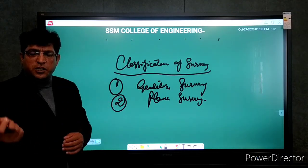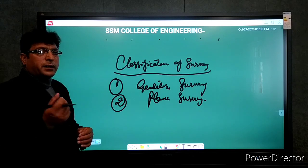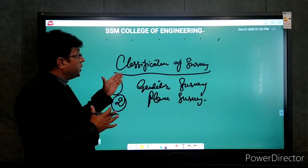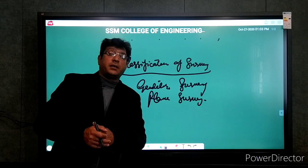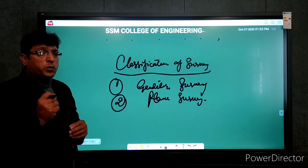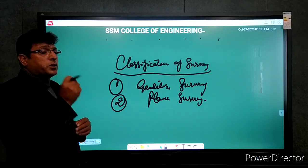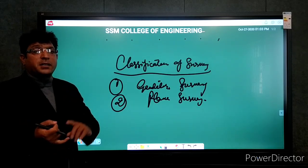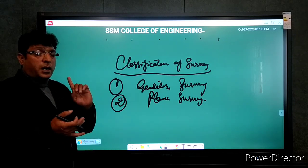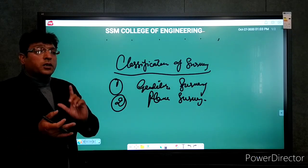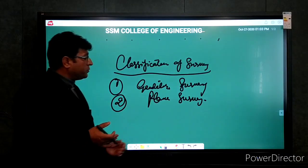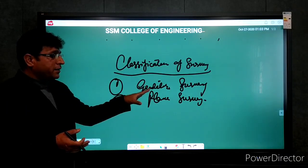Plane survey mein hum chhote instruments istemal karte hain — suppose tape ko use karte, chain ko use karte. Geodetic survey mein sophisticated instruments istemal hote hain — hamare paas compasses, theodolites, aur aaj ke date mein total stations hain. With the help of those instruments we complete that survey.